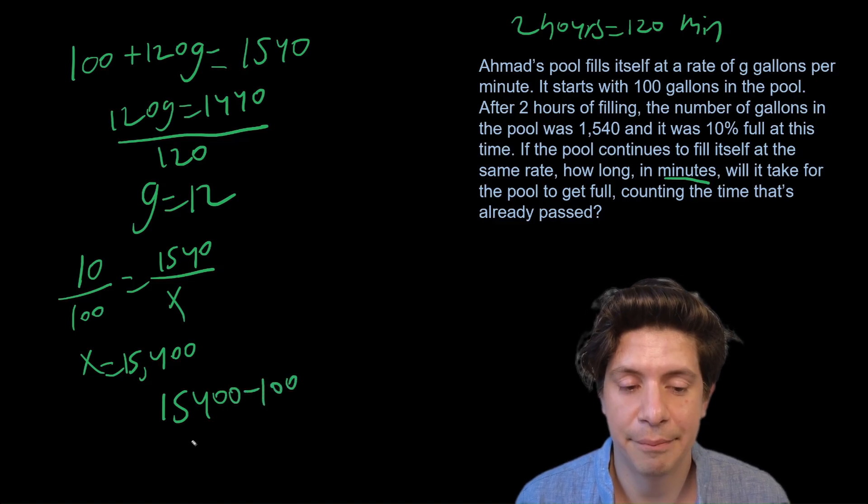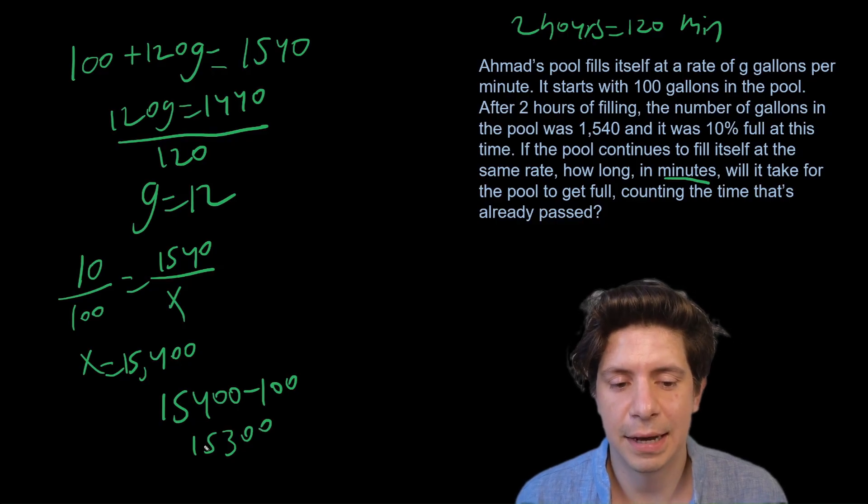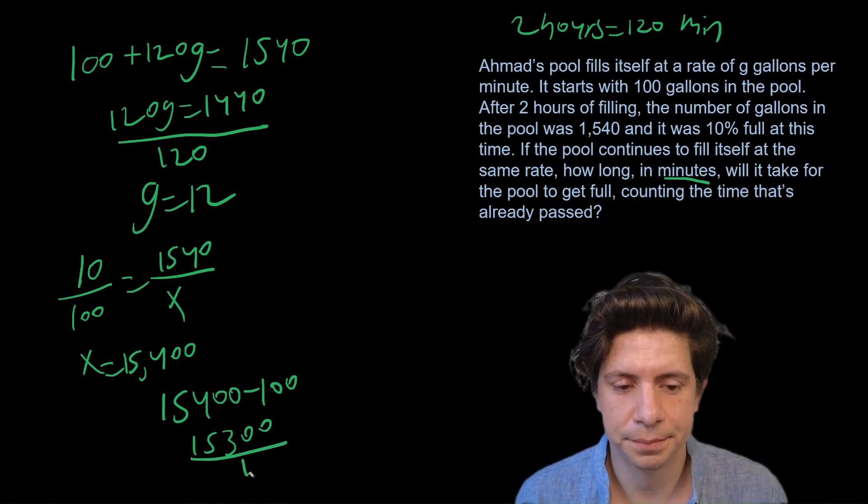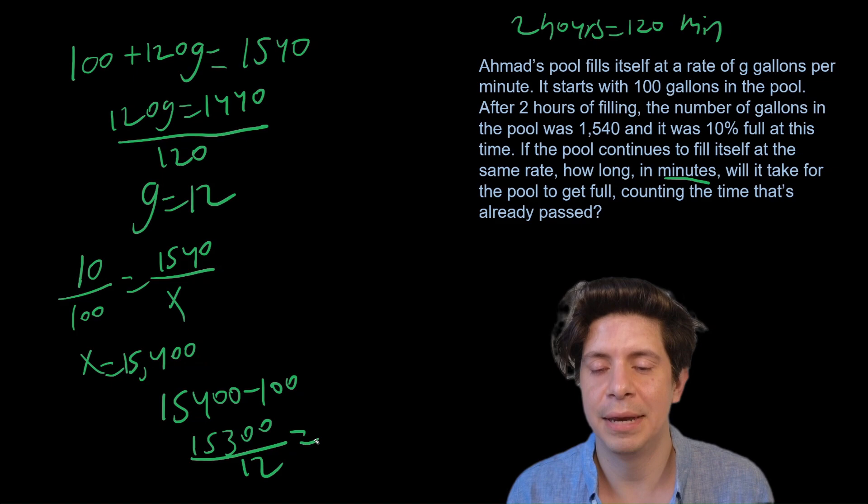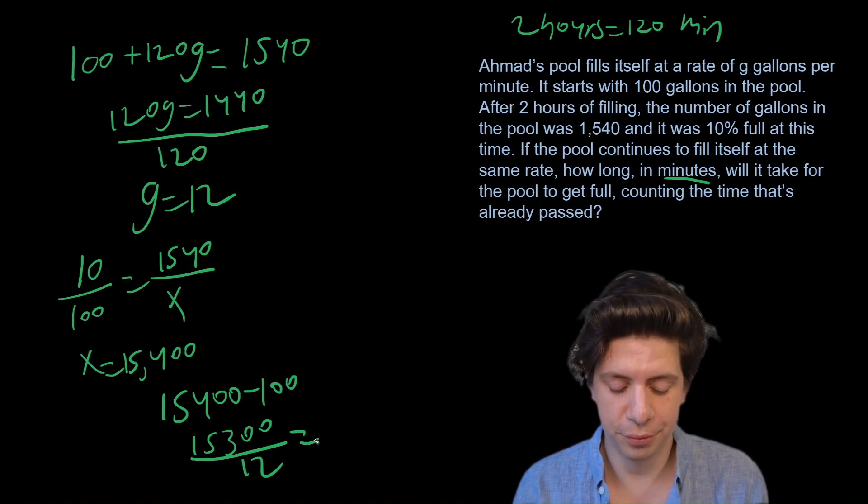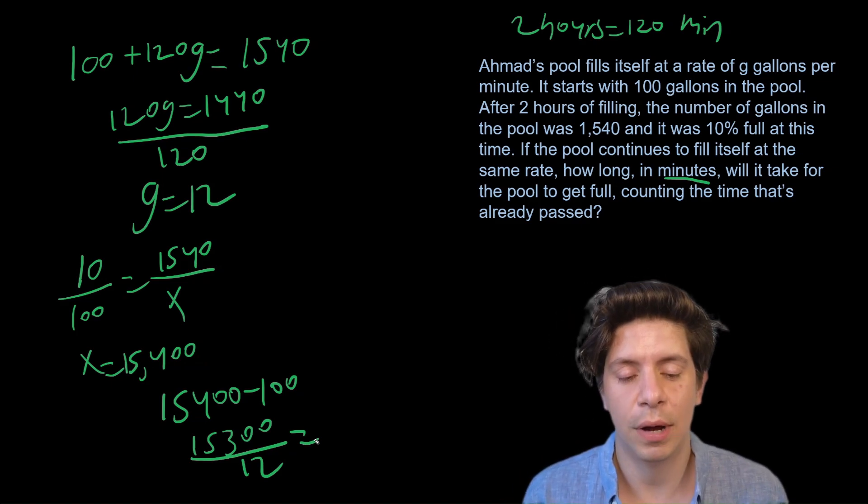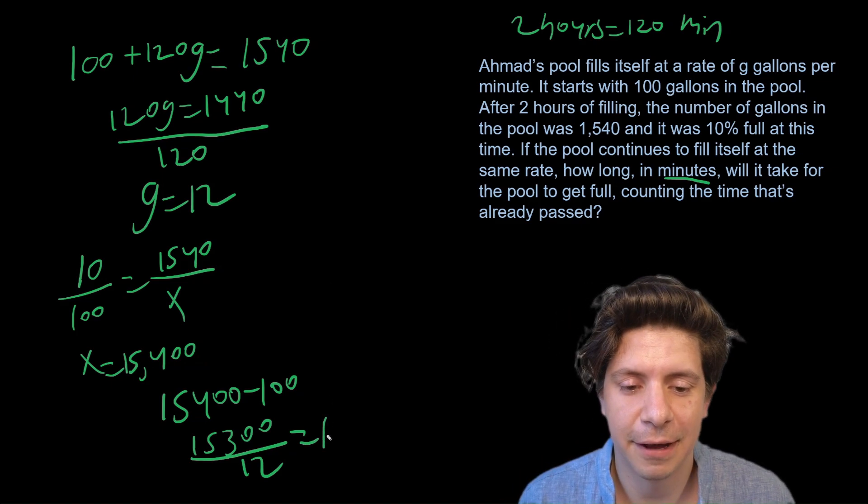And then divide that by... so that'll be 15,300, let's divide that by 12, and that will give us the amount of time in minutes that it took to fill the pool. And that'll give us 1,275 minutes.